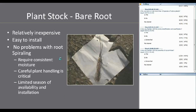Bare rootstock can be really valuable and is a great tool. It's great for reforestation, inexpensive, easy to install, and no problems with root spiraling. You do have to have good consistent moisture and be really careful when handling — for drier conditions you need those wrapped in damp burlap and kept in the shade. There's also a limited season of availability, really mostly spring with a little window in the fall. But if you have projects to plant in the middle of the summer, you could buy bare rootstock, put them into one gallons or deeper rooted containers, and have those available for summer planting.